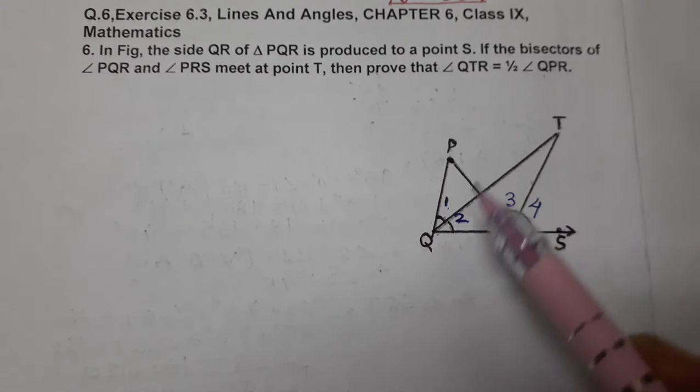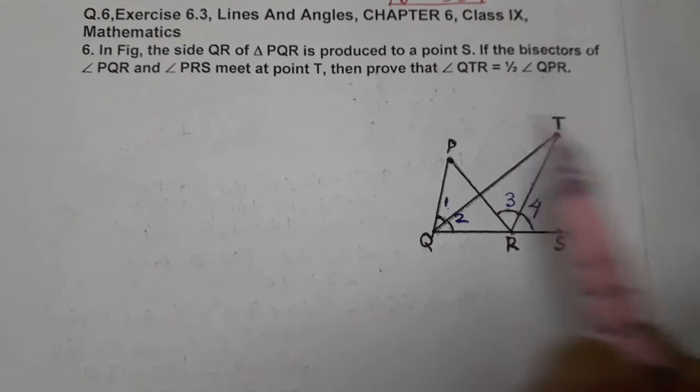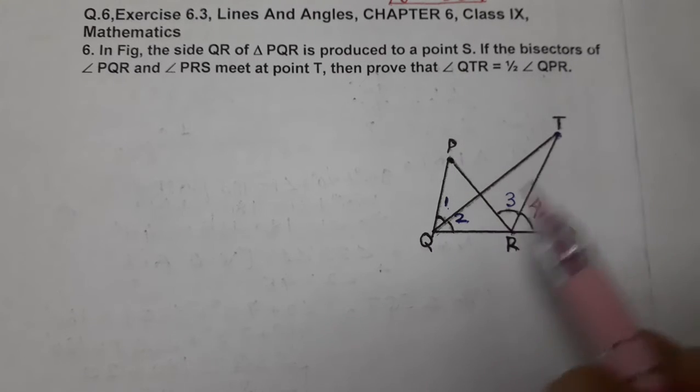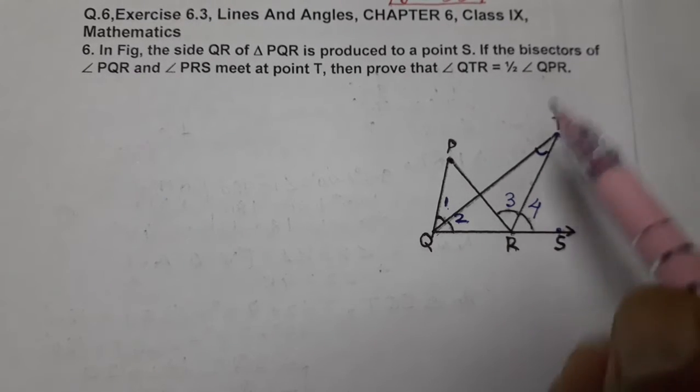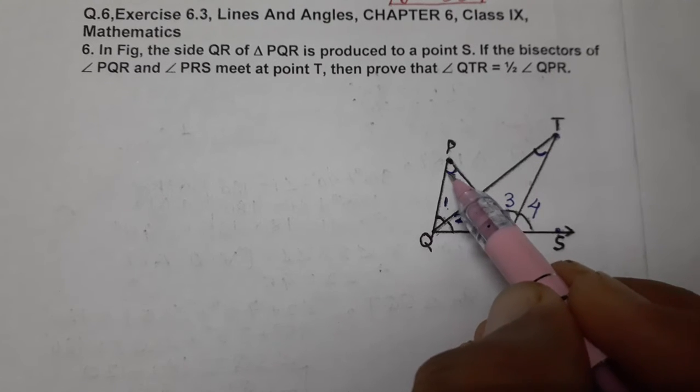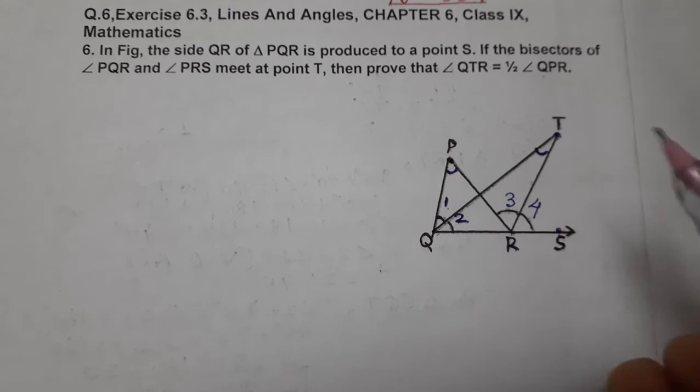They meet at point T. This is given to us. And we have to prove what? Angle QTR equals half of angle QPR, this is half of angle P. So start with proof.